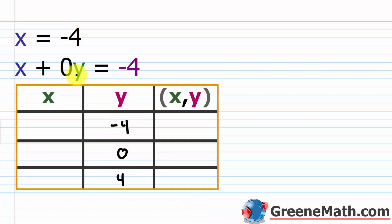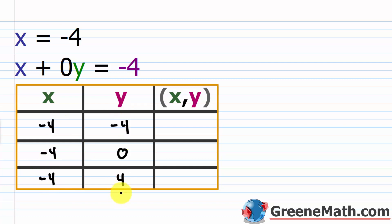If I plug in negative 4 for y: 0 times negative 4 is 0, so x is negative 4. The same thing if I plug in 0 for y: 0 times 0 is 0, so x is negative 4. And with y equals 4: 0 times 4 is 0, so x is negative 4. The idea here is that x is always negative 4 no matter what you choose for y. So we can write the ordered pairs as (−4, −4), (−4, 0), and (−4, 4).